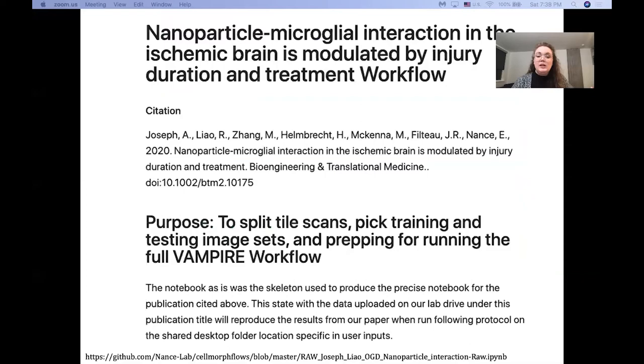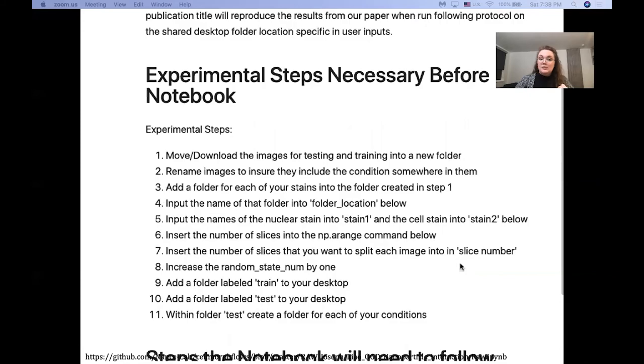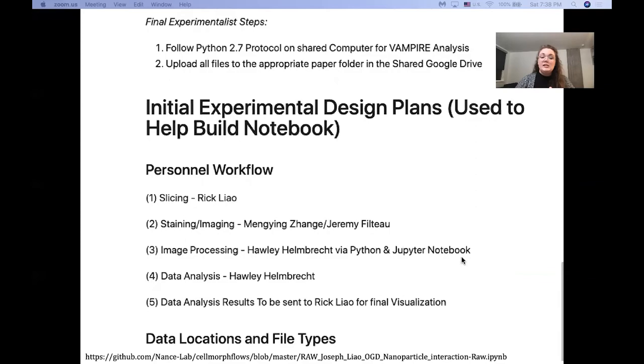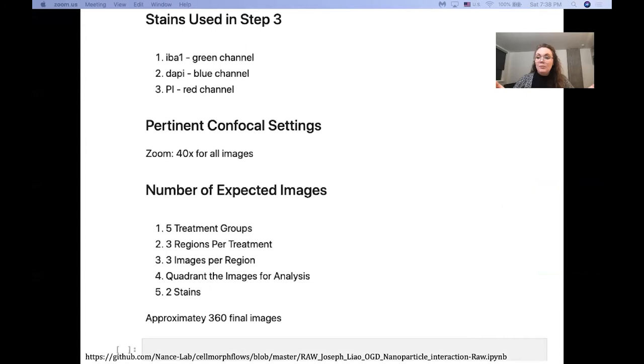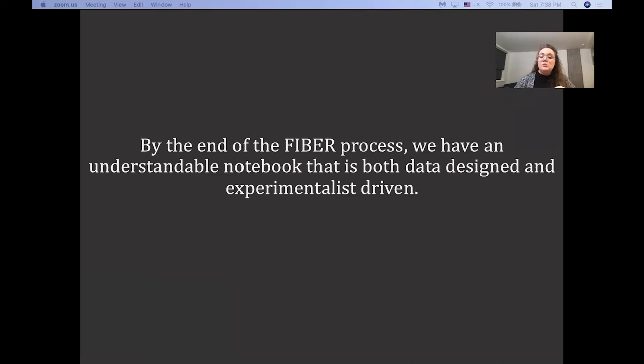So we design at least one notebook per paper where we include things like experimental steps that exist before data science, all the data science steps we can already tell are going to need to go into this, how our personnel workflow will exist, what all our data locations file types are. We can talk about treatment, every region we're interested, every stain that we've used. And we can actually extrapolate from that how much data we will have and how much data will need to be processed in that notebook before we even get to the notebook. And by the end of the FIBER process, we have an understandable notebook that is data designed and experimentalist driven so that experimentalists understand where we're coming from.